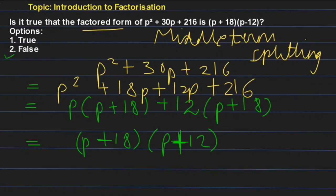So the answer is false. The factored form of this is not this, right? It is not this. So the answer is false, and I hope you have understood how we did the factorization part. Thank you students.